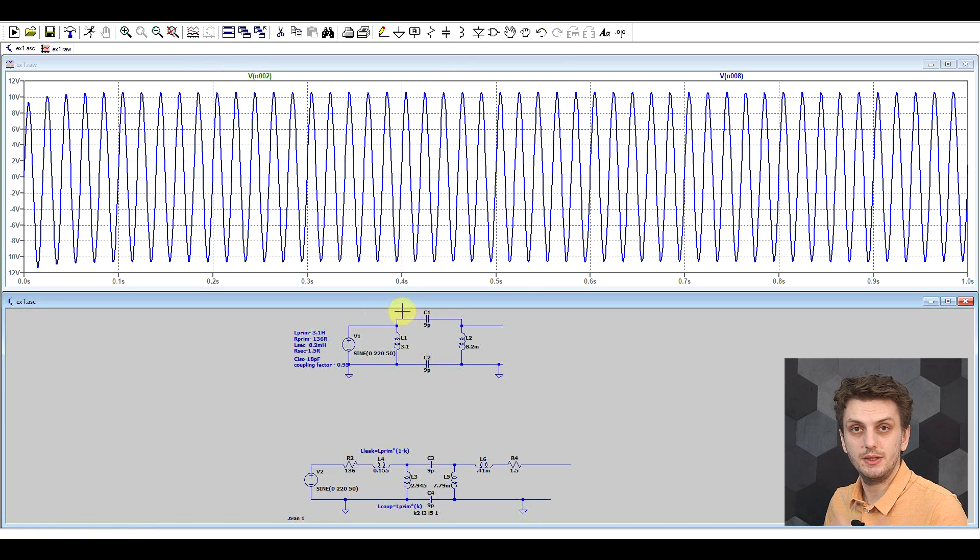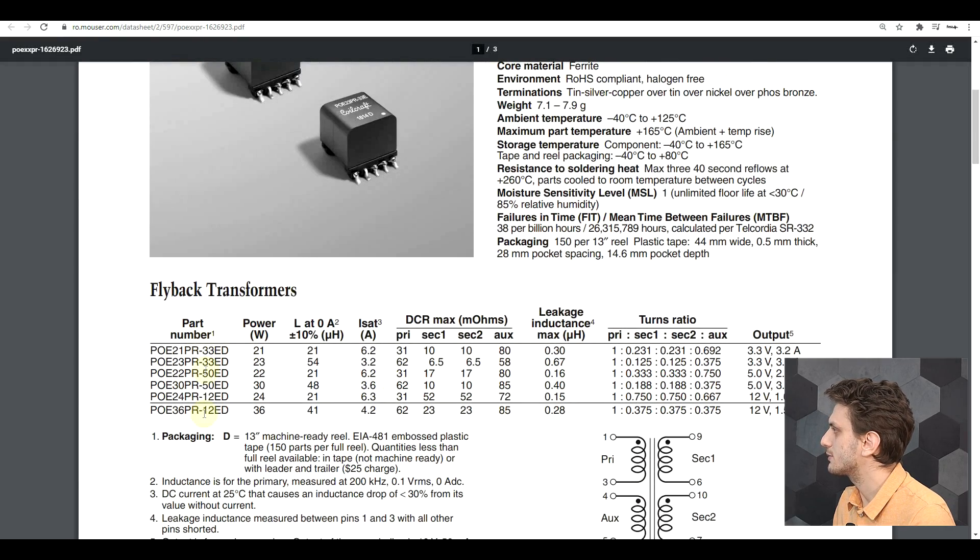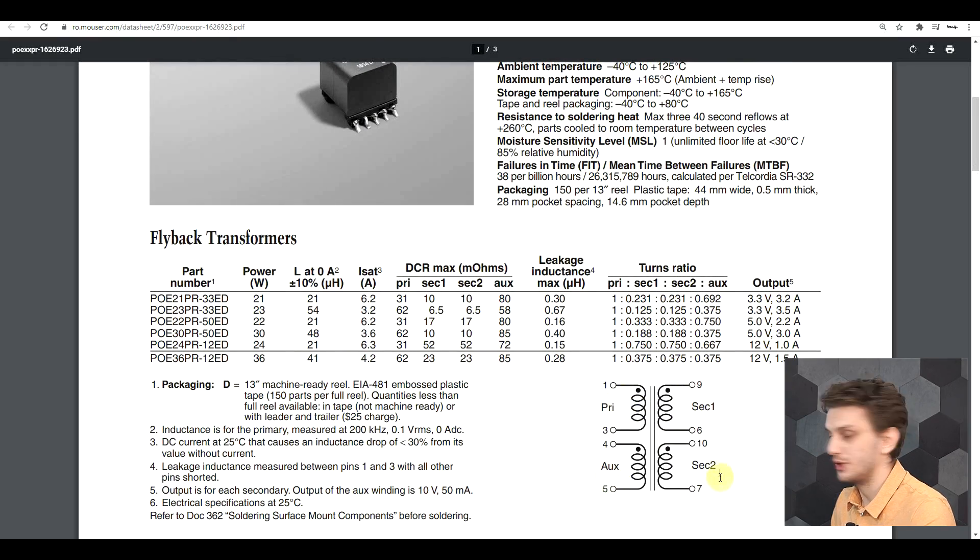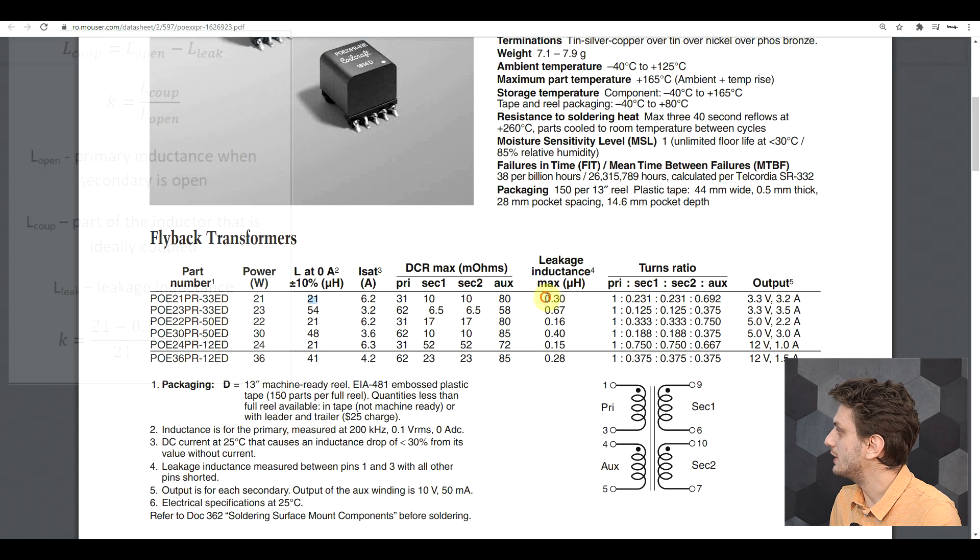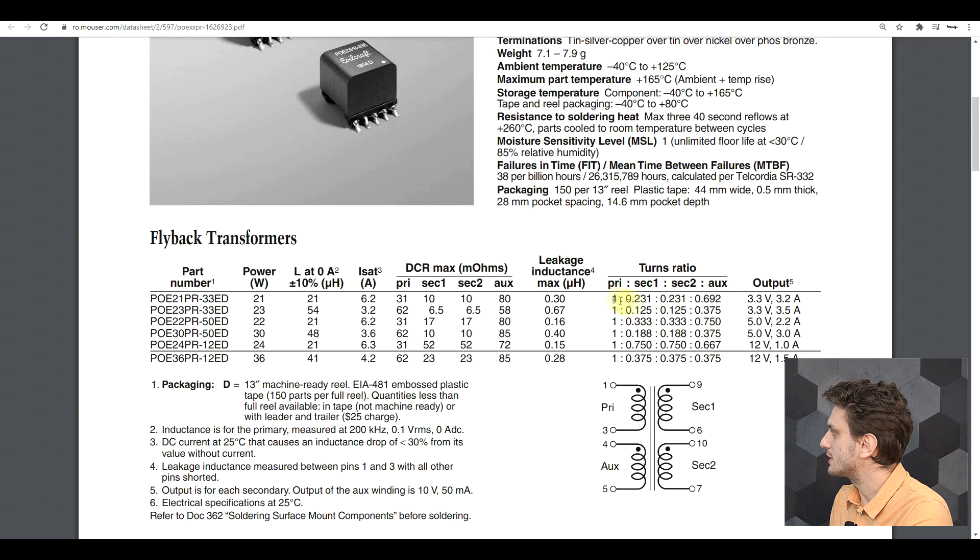So now let's look at how we could obtain these parameters from a datasheet. Because if you don't have the transformer yet, how are you gonna simulate it? So what I got here is the datasheet for a switching converter transformer. I mean there's multiple transformers. And here we have a four inductor transformer, so it has one primary and three secondaries. We have the DC resistances for all four of the inductors. We have the primary inductance. And rather than giving us a coupling factor, they're giving us our leakage inductance. So from these two inductances we can work out what the coupling factor is. And they also give us the turns ratio.